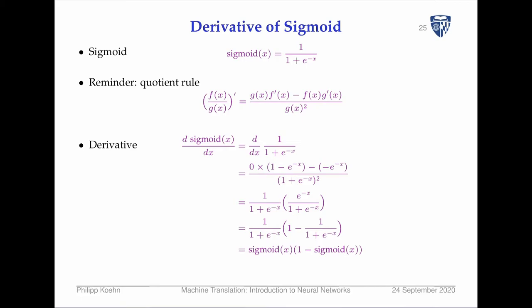Here's a math cheat sheet for the derivative of the sigmoid. We need to compute gradients, so we need the derivative of the sigmoid activation function. The definition of the sigmoid, after working through the math, gives us that the derivative of sigmoid(x) is sigmoid(x) × (1 - sigmoid(x)).